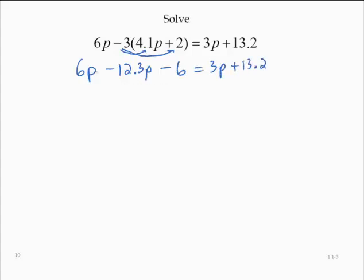Simplifying the left-hand side further, we have some, or I should say, like terms. 6p minus 12.3p is negative 6.3p minus 6 is equal to 3p plus 13.2.